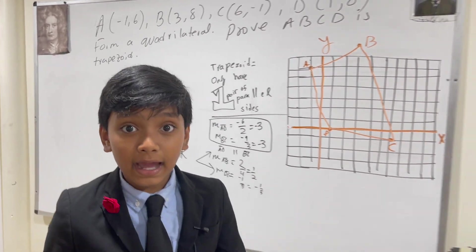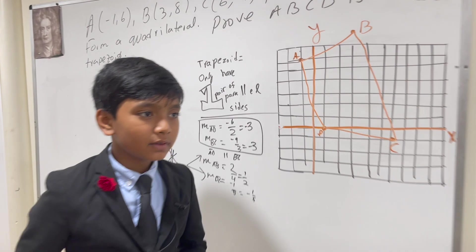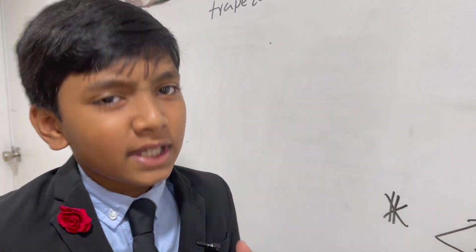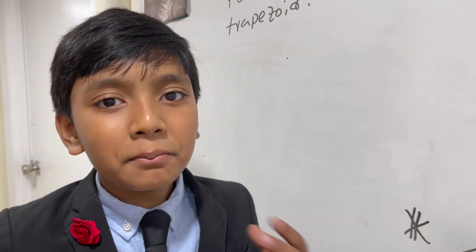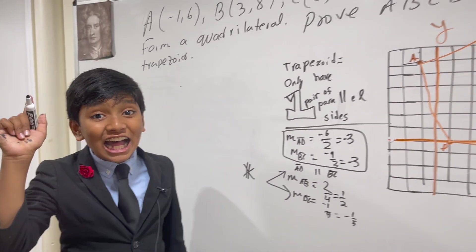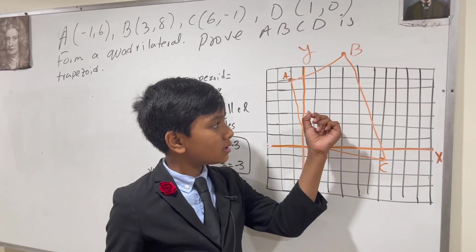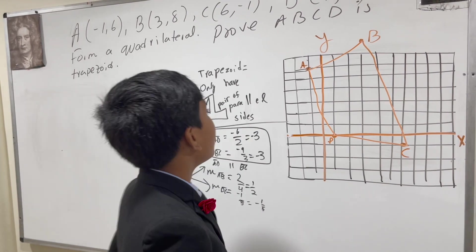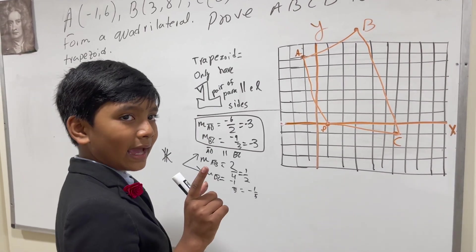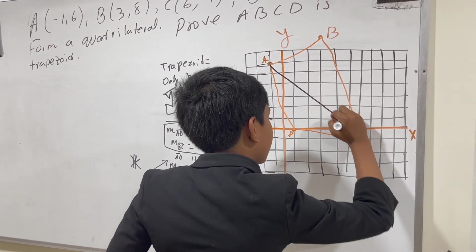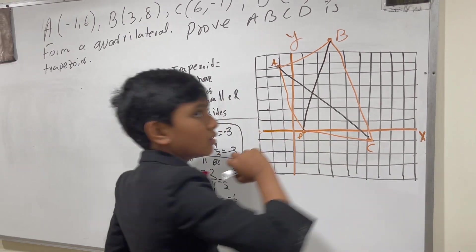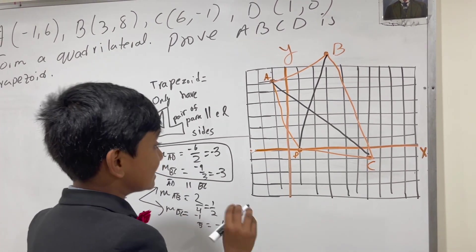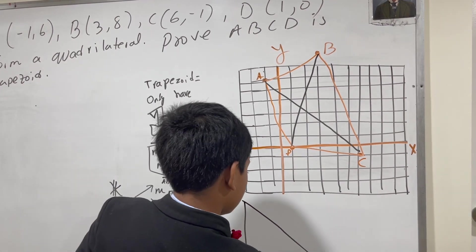But how do we prove that it's an isosceles trapezoid? Well, the person who made the triangle, named Riley for whatever reason, said, well, this isosceles trapezoid must have congruent diagonals. Now we have to prove that this is not an isosceles trapezoid. So how do we prove that? Well, let's look at the diagonals.